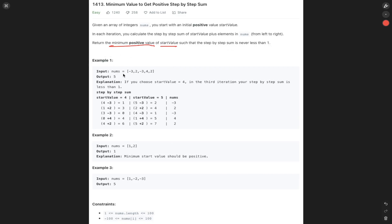Let's break this down. In example one, we have this nums array. The output is five. Why is the output five? If we start at five and add -3 to that value, that brings us down to two. Then we add two, bringing us to four. Minus three brings us to one. Remember, this is the minimum - the value can never be less than one. Then it's five, then seven. So five is the minimum value.